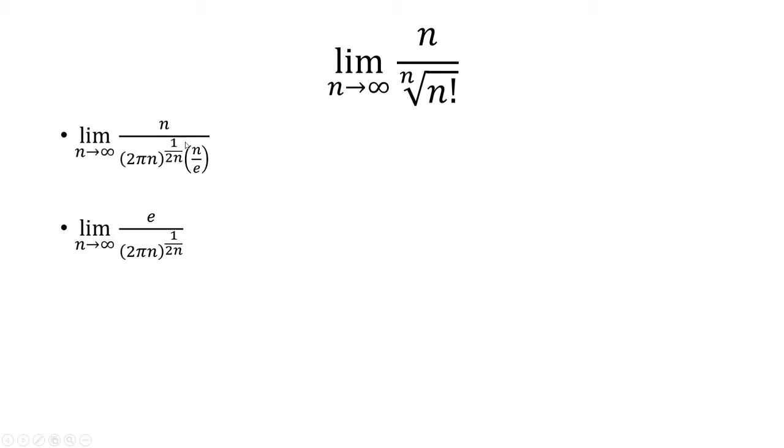Now the n's will cancel and then the e will come up at the top. Because it's really 1 over 1 over e and that's just e.